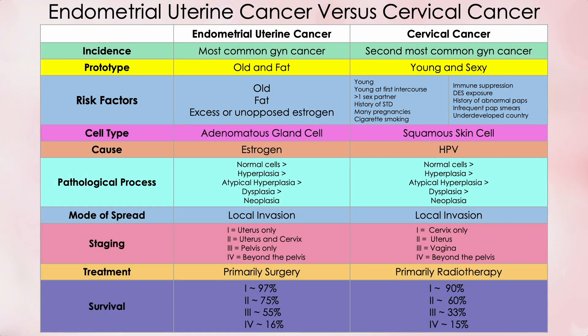Finally, the 5-year survival rates differ significantly stage for stage. Stages 2 and 3 exhibit the greatest differences: 5-year survival for stage 2 endometrial uterine cancer is 75%, but only 66% for cervical cancer. For stage 3, endometrial uterine cancer is 55%, while cervical cancer is only 33%. Overall, survival statistics are much better for endometrial uterine cancer than for cervical cancer.